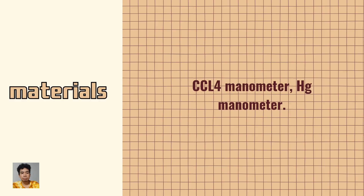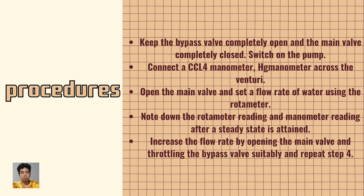The materials used in the experiment are carbon tetrachloride manometer and mercury manometer. Procedures: 1. Keep the bypass valve completely open and the main valve completely closed. Switch on the pump.